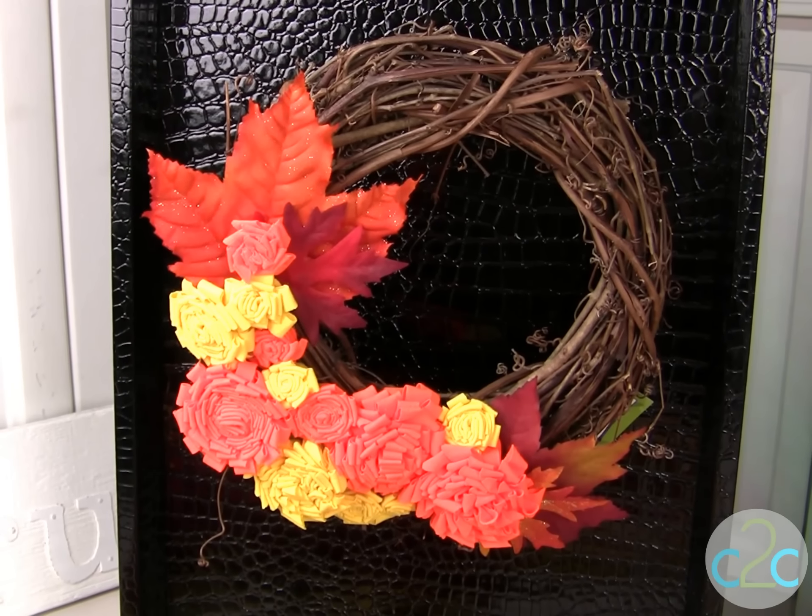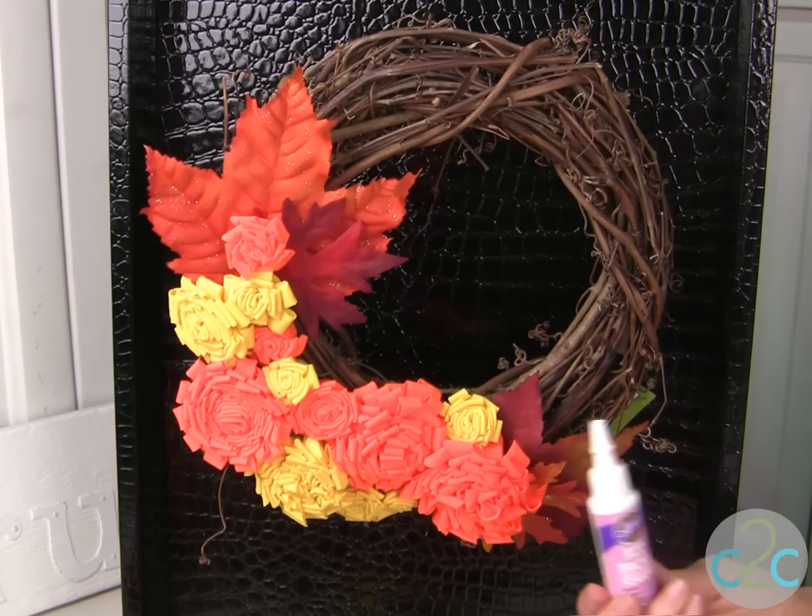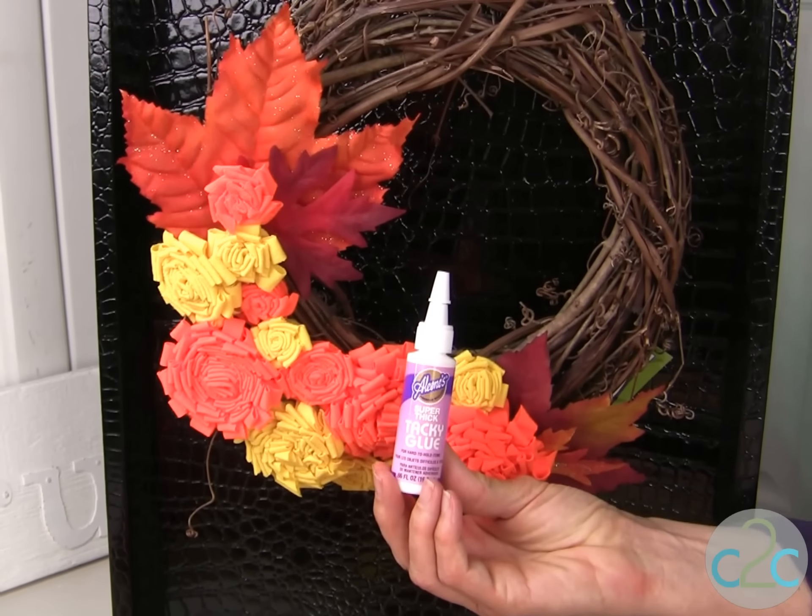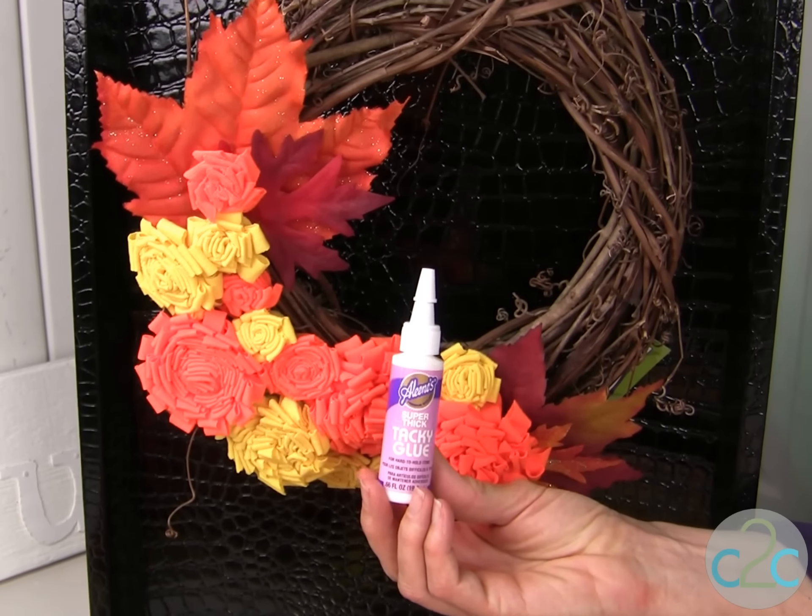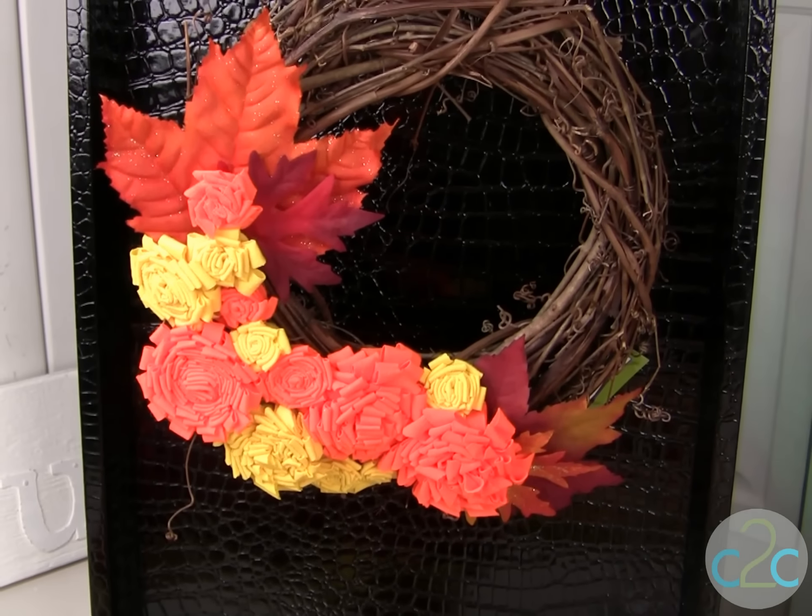It is so easy to create these fabric flowers by the dozen. When you want to attach them to your wreath, just use your Aleene's Super Thick Tacky Glue. This is available in a tacky pack. Glue all of your pieces onto your wreath and you are all set for fall.